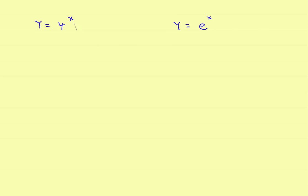If you're lucky, this is going to be a number raised to the x power — for instance, four to the x. Let's compare that to e to the x. The new rule says y prime equals the natural log of the base — so natural log of four — times the original function, times the derivative of the exponent. The derivative of x is one, so you just wind up with natural log of four times four to the x.